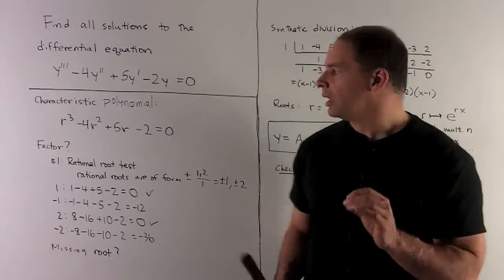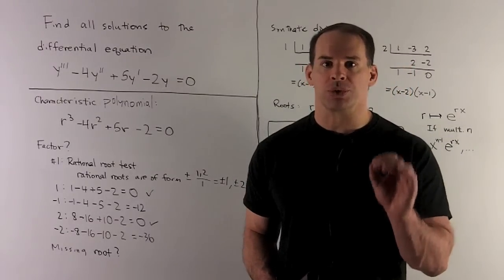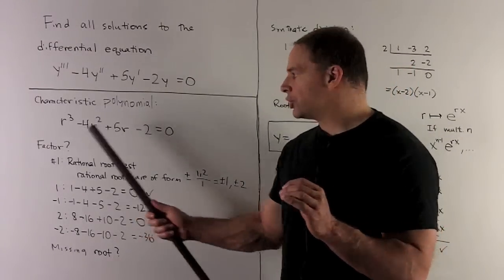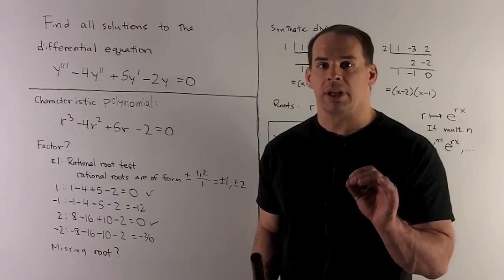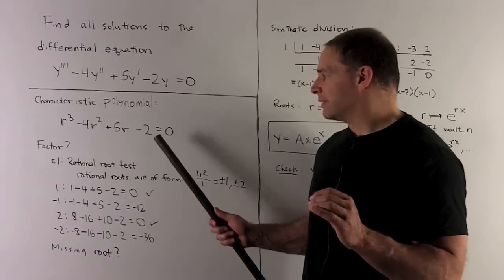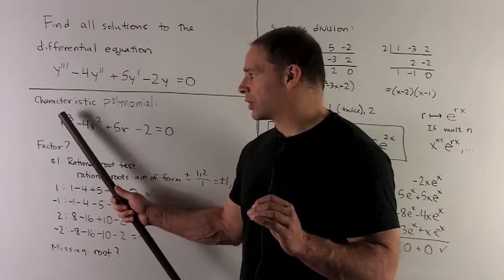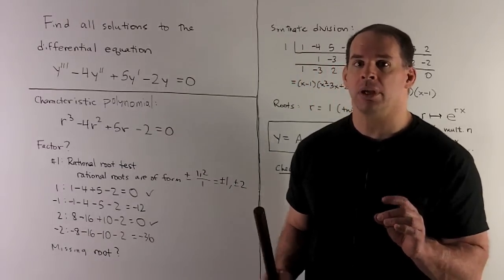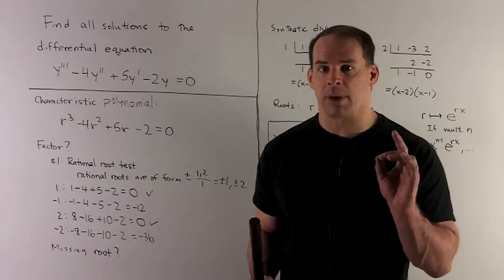First one, our polynomial has integer coefficients, so we can apply the rational root test. What that says is if we have all the integer coefficients, then the rational roots, if there are any of them, are going to be of the form plus minus divisors of the 2 divided by the divisors of the leading term. So it's going to be a 1, so there's only one divisor, which is 1. Possible rational roots, then, are going to be plus minus 1 plus minus 2.